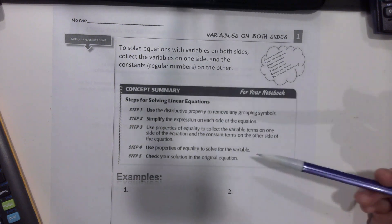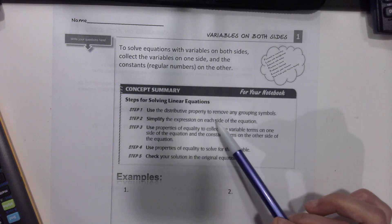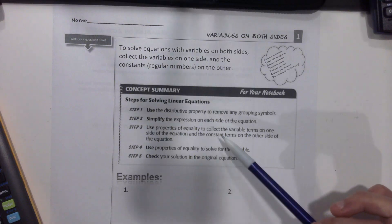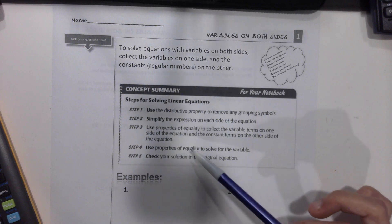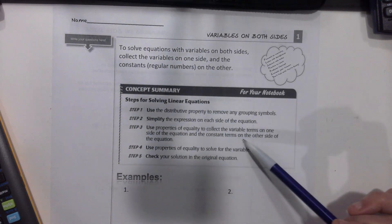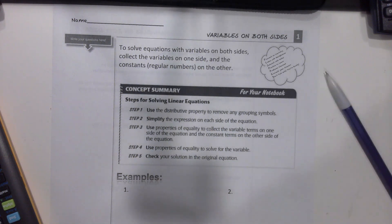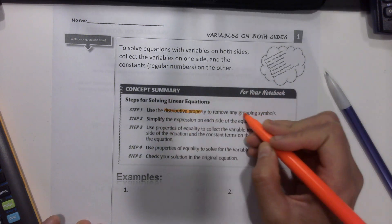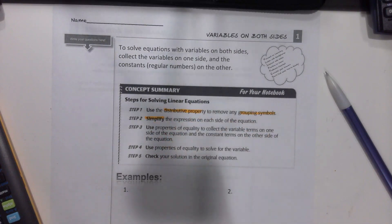Even though this seems boring, definitely want to read through the step-by-step. Step 1: use the distributive property to remove any grouping symbols. Step 2: simplify the expression on each side of the equation. The key words here are distributive property, remove grouping symbols, and simplify, which means combining like terms.